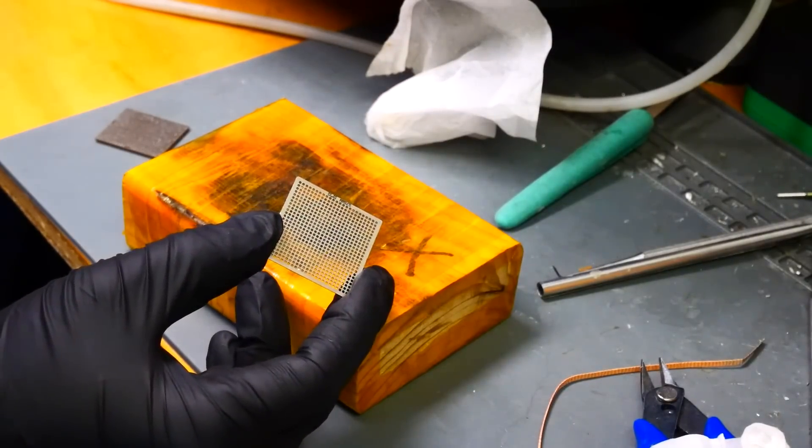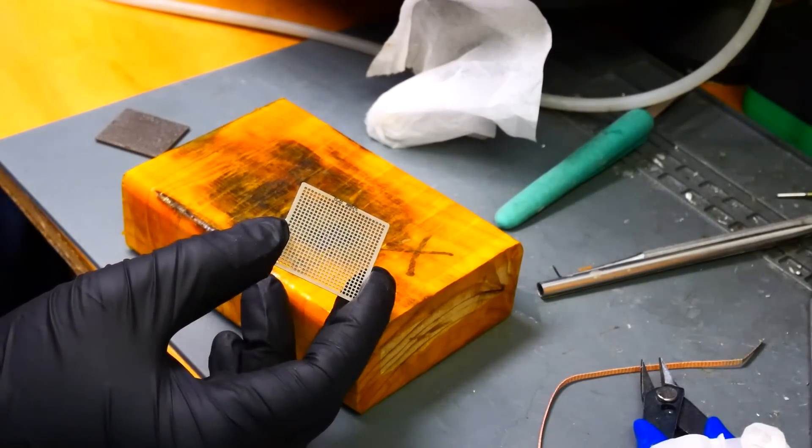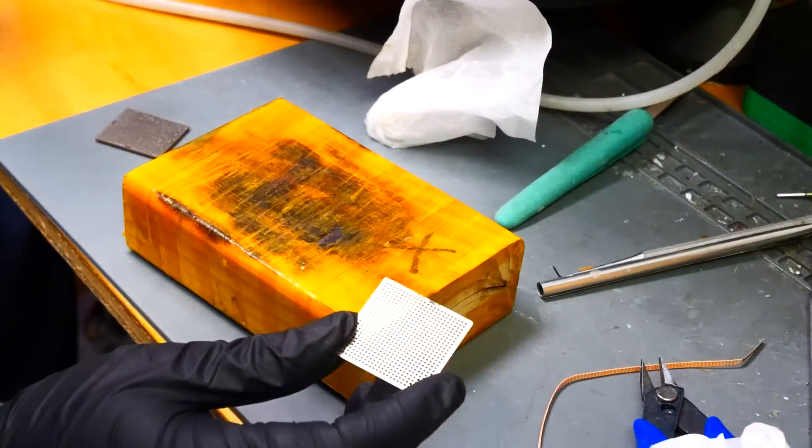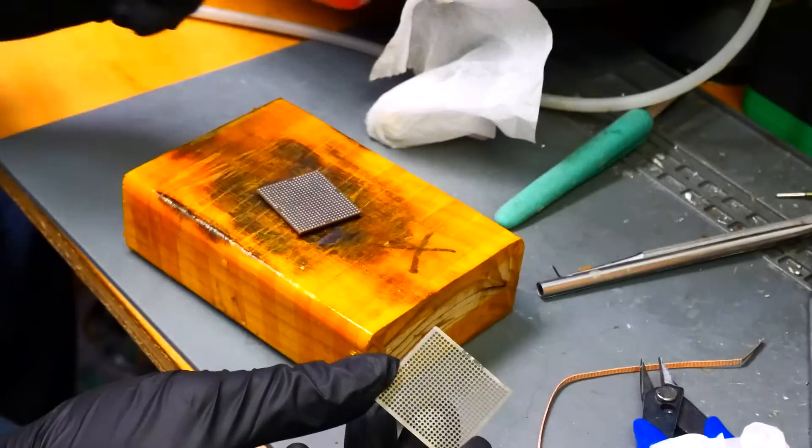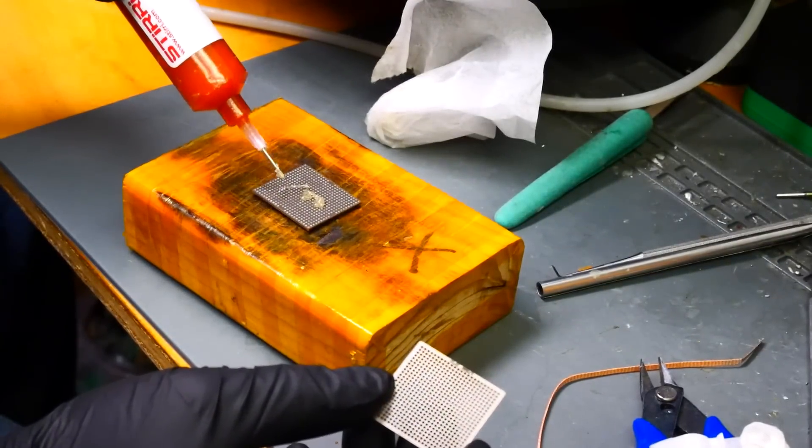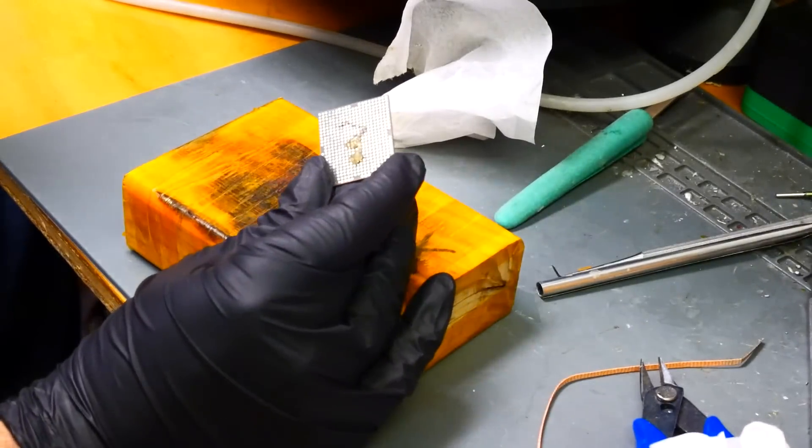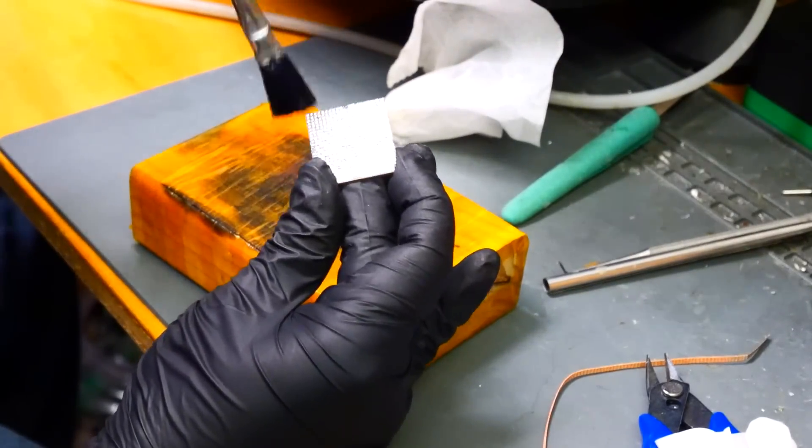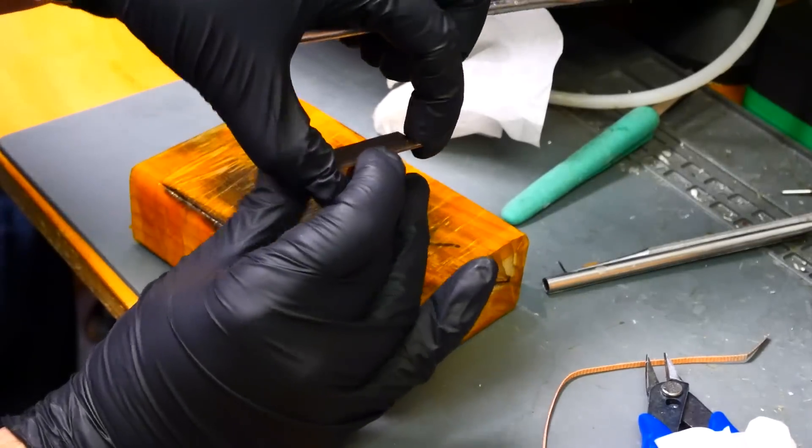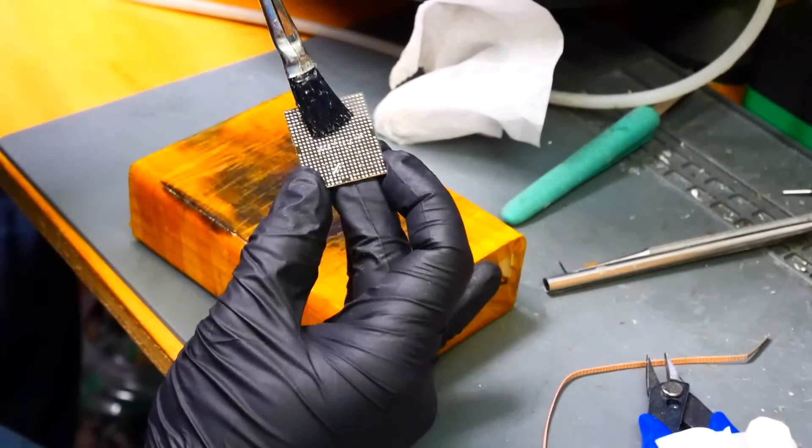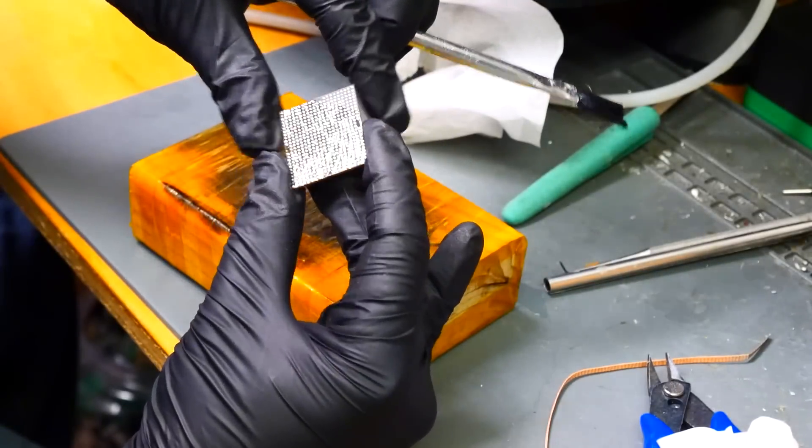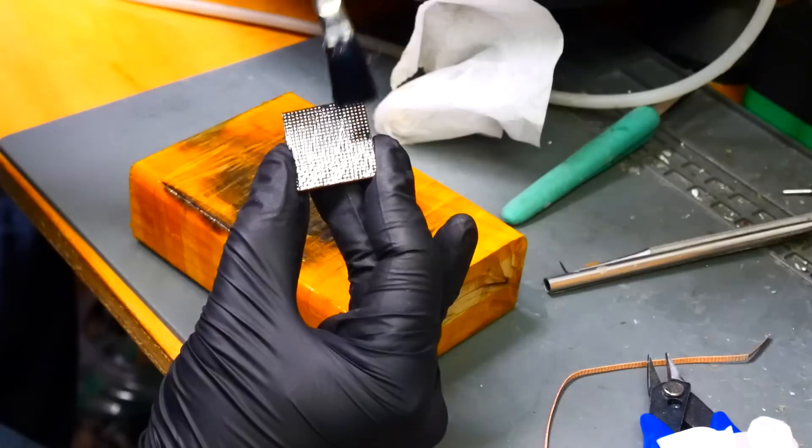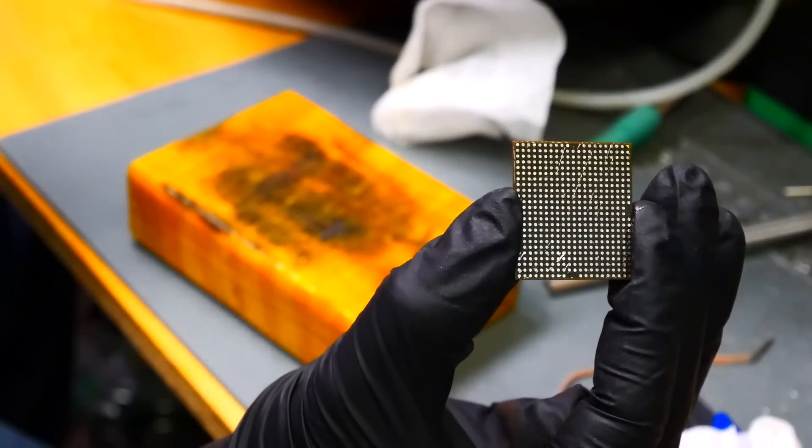This particular BGA uses 0.76 millimeter solder balls. We'll be using our Amtec flux, it's a tacky flux. It looks like a lot of flux but I assure you it's going to get all wiped away here in a second. And we're just applying it with a brush. And there you are, just ready for the stencil.